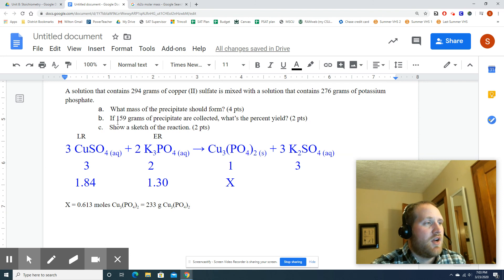Letter B says if 159 grams of precipitate are collected, what's the percent yield? Well, percent yield is what you got divided by what you should have gotten, or it's your experimental yield divided by your theoretical yield. So we have numbers here. This 159, is that your theoretical or your experimental yield? Well, since it says that's how many grams were collected, that's your experimental yield. So we go 159 grams divided by your theoretical yield is how much you should get based on the math, 233.